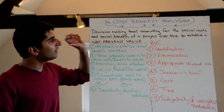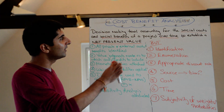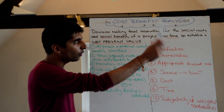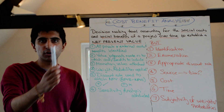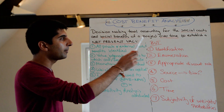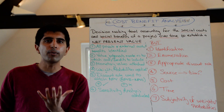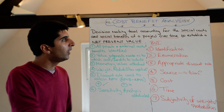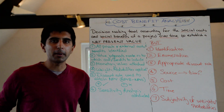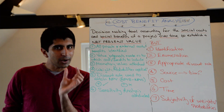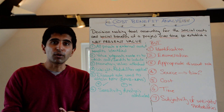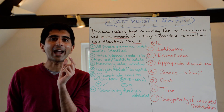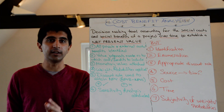This is the definition of cost-benefit analysis. It's a decision-making tool accounting for the social cost and the social benefits of a project over time to establish a net present value. There are some really important bits in this definition. The social cost and social benefits are included — whenever that word 'social' comes, it means private and external. So for costs, the private costs and the external costs will be included.